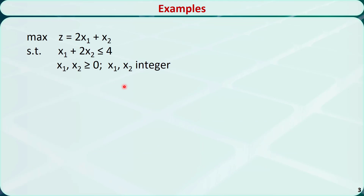Let's check some examples. This is a maximization problem with two decision variables, x1 and x2. They are both required to be greater than or equal to 0, and they are both required to be integer numbers. So it is a pure integer programming problem.